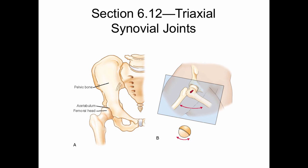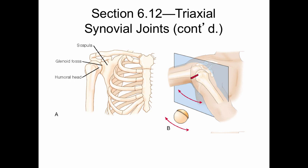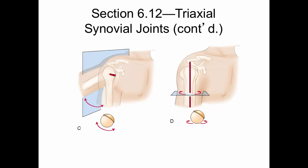Triaxial synovial joints are ball and socket joints — one bone has a convex ball that fits into another bone's concave socket. Two examples are the shoulder joint and the hip joint. The shoulder joint demonstrates flexion and extension in the sagittal plane around a medial-lateral axis, abduction and adduction in the frontal plane around an anterior-posterior axis, and medial and lateral rotation in the transverse plane around a vertical axis. Triaxial synovial joints have multi-planar, multi-axis motions.